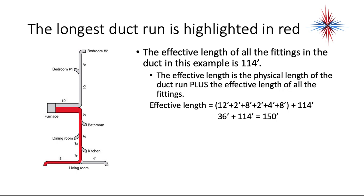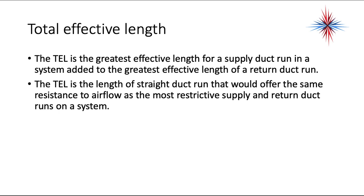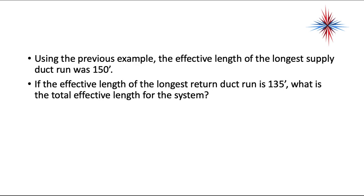The effective length is the physical length of the duct run plus the effective length of all the fittings. The total effective length is the greatest effective length of a supply duct run added to the greatest effective length of a return duct run. In the previous example, the effective length of the longest supply duct was 150 feet and the longest return duct was 135 feet, giving a total effective length of 285 feet.